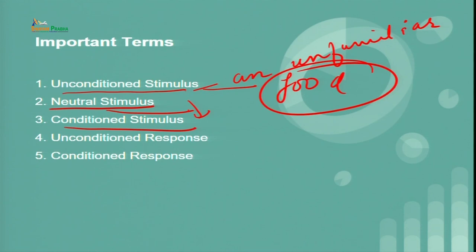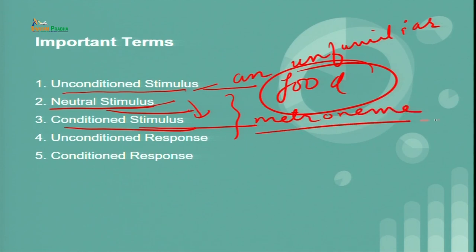When we talk about conditioned stimulus, it means the stimulus which was once unconditioned is now conditioned and elicits a specific response. In Pavlov's classical conditioning theory, the metronome a dog hears for the first time is the neutral stimulus. After it elicits a response, it becomes a conditioned stimulus. The ringing of the bell or the metronome is first a neutral stimulus and then converts into a conditioned stimulus. Each time the dog hears it, it becomes conditioned to salivate — a process of unlearning and learning by which we associate the stimulus with a feeling or emotion, producing a predictable response.